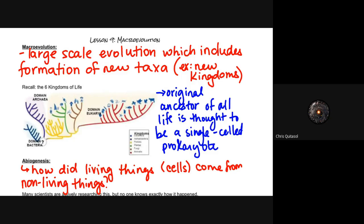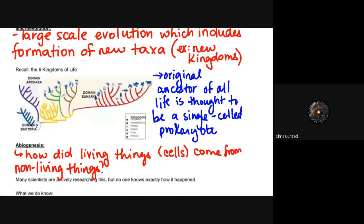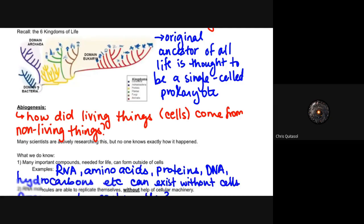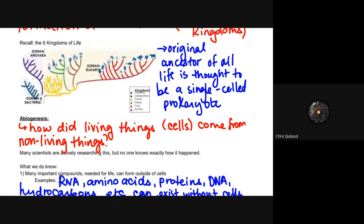Recall that the six kingdoms of life are bacteria, archaea, and eukaryotes in some way, shape, or form, including all the different types of eukaryotes like protists, plantae, animalia, and fungi. The original ancestor of all life is thought to be one single-celled prokaryote. So if all of those different kingdoms came from one single prokaryotic cell, how did that come to fruition?